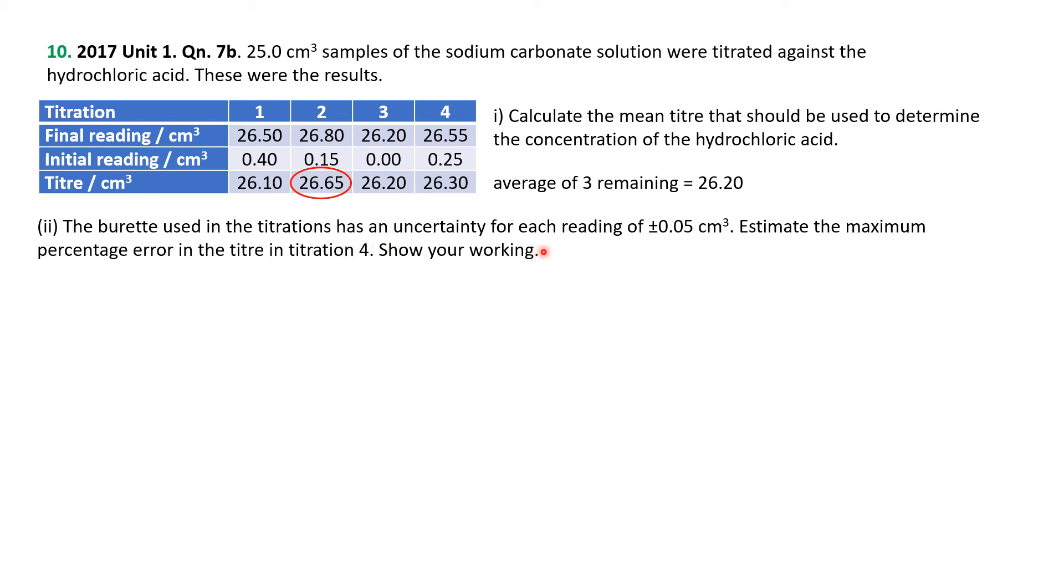The burette used in titrations has an uncertainty for each reading, plus or minus 0.05, estimate the maximum percentage error of the titer in titration 4. You've got two readings, a reading at the start and a reading at the end, and each one has got a plus or minus 0.05 cubic centimeter error. Therefore, the combined error at the start 0.05 and at the end 0.05 is 0.1. If you assume they don't cancel out, if you assume the worst it could be, is that each one is either both negative 0.05 or positive 0.05, meaning the error is 0.1. Percent error, 0.1 over the 26.3 that was determined times 100, which is 0.38%. Not horrible.